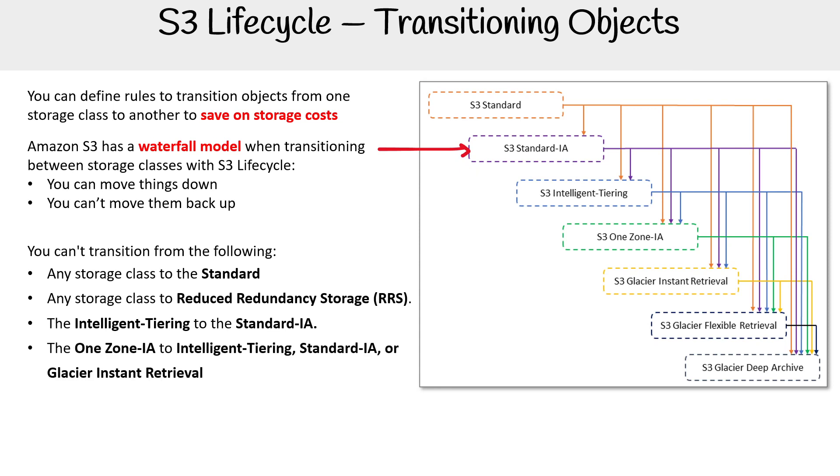The One Zone IA to Intelligent Tiering, Standard IA, or Glacier Instant Retrieval. Just taking a look here again, we have One Zone IA. It can't go from here to here to here—that makes sense. And then Standard IA or Glacier retrieval, so it can't also go to here as well.